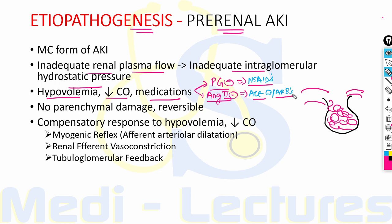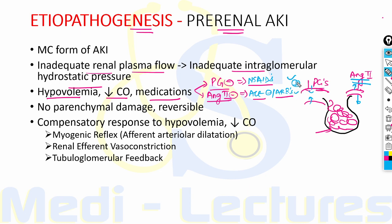The intraglomerular hydrostatic pressure is maintained by dilation of the afferent arteriole with the help of prostaglandins and constriction of the efferent arteriole with the help of angiotensin 2. NSAIDs inhibit prostaglandins, thereby inhibiting vasodilation of the afferent arteriole, while ACE inhibitors and ARBs dilate the efferent arteriole. This leads to inadequate intraglomerular hydrostatic pressure and inadequate glomerular filtration, so these drugs should be avoided especially in combination.